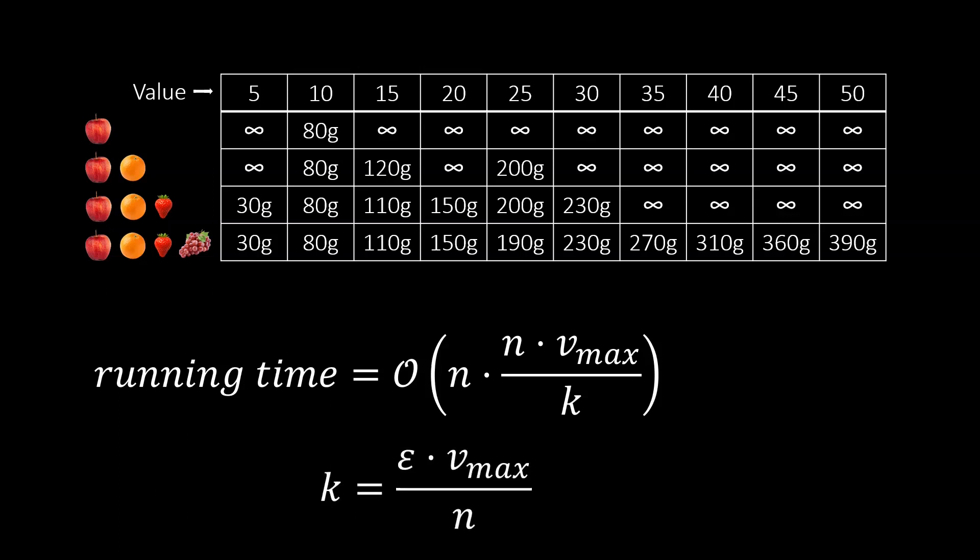By choosing K as shown here, the runtime becomes n cubed times 1 over epsilon. This is clearly polynomial in n and 1 over epsilon. Note that the choice of K was not only made to ensure the runtime property, but already has the approximation property in mind.